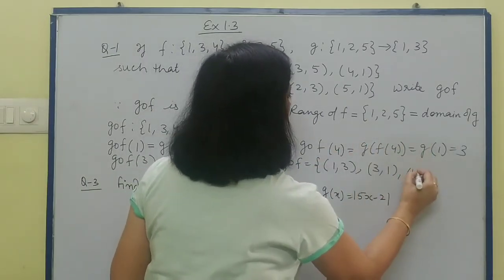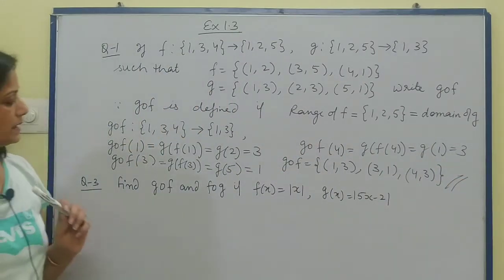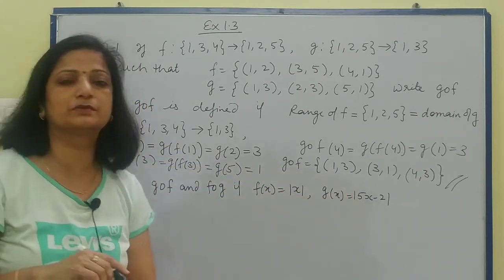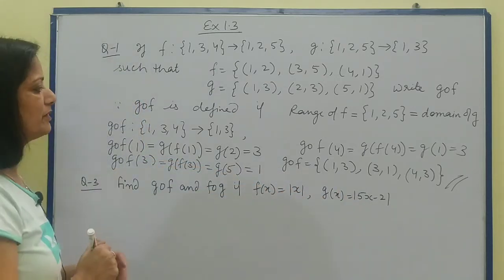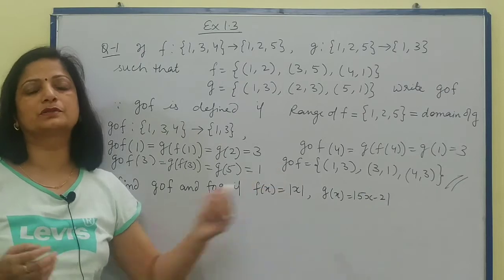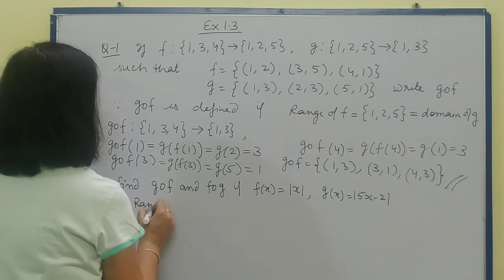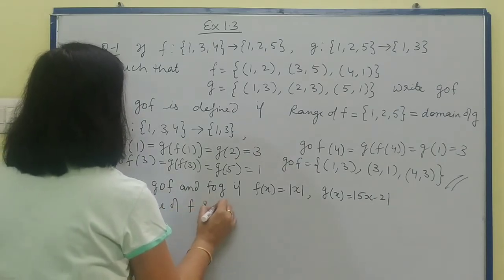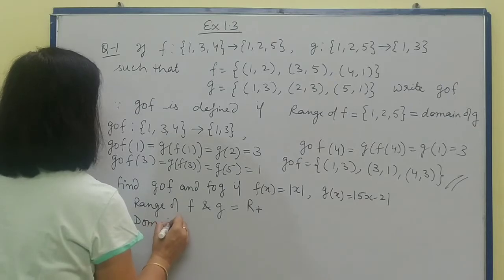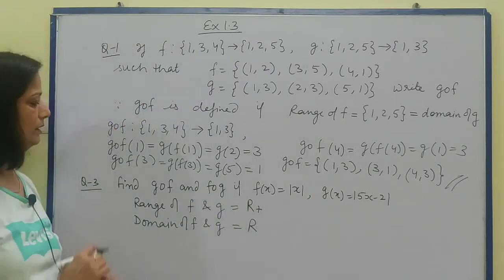Second question: Find g composite f and f composite g if f(x) equals mod x and g(x) equals 5x minus 2. In modulus function, the domain is the complete set of real numbers, and the range is positive numbers. So here you'll write: range of f and g equals R plus, and domain of both f and g is the complete set of real numbers.